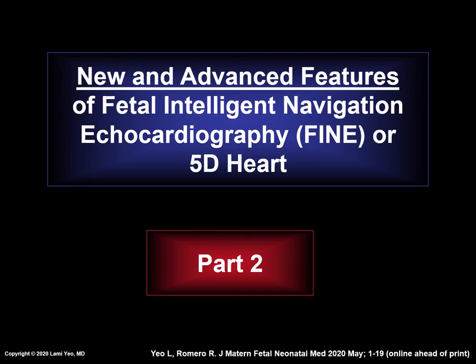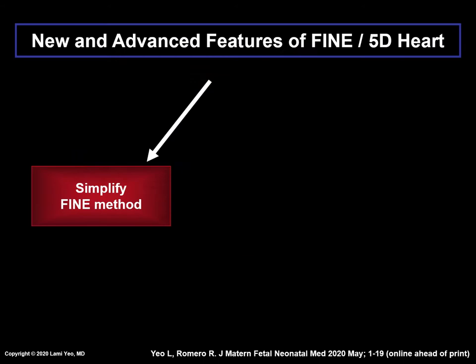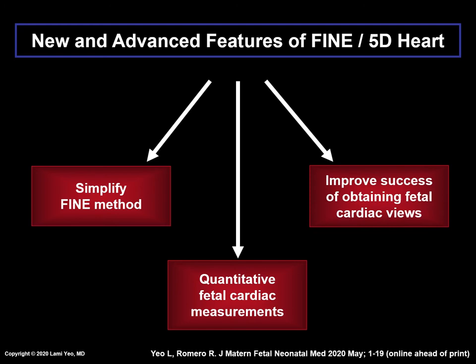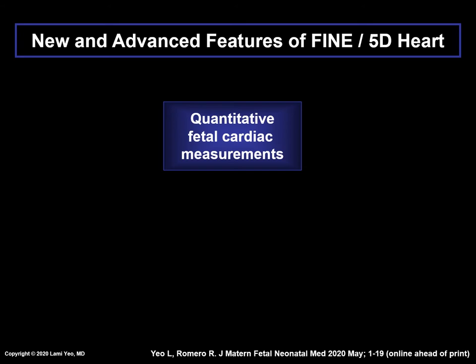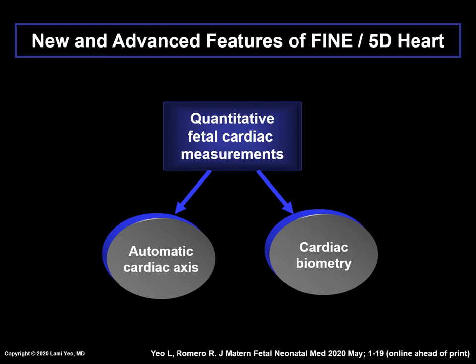Now we will review the new and advanced features of FINE — this is Part 2. The new and advanced features of FINE can be broadly classified into three goals: simplify the FINE method, perform quantitative fetal cardiac measurements, and improve the success of obtaining fetal cardiac views. In Part 1, we already reviewed five ways to simplify the FINE method. Now, in this presentation, we will review the other two goals. Quantitative fetal cardiac measurements consist of two features: automatic cardiac axis and cardiac biometry.